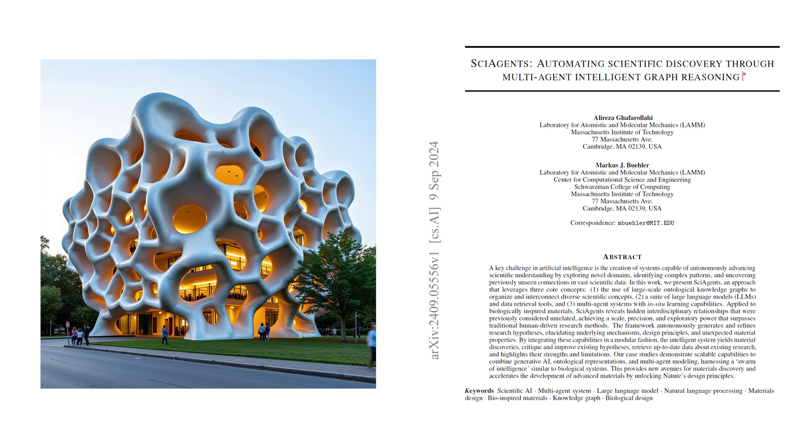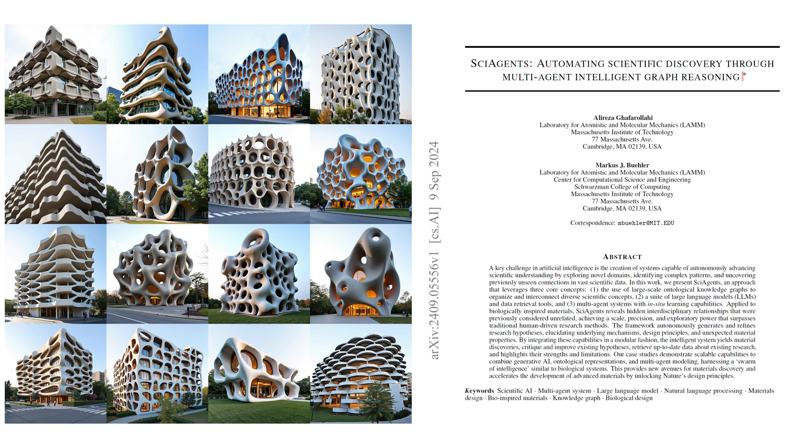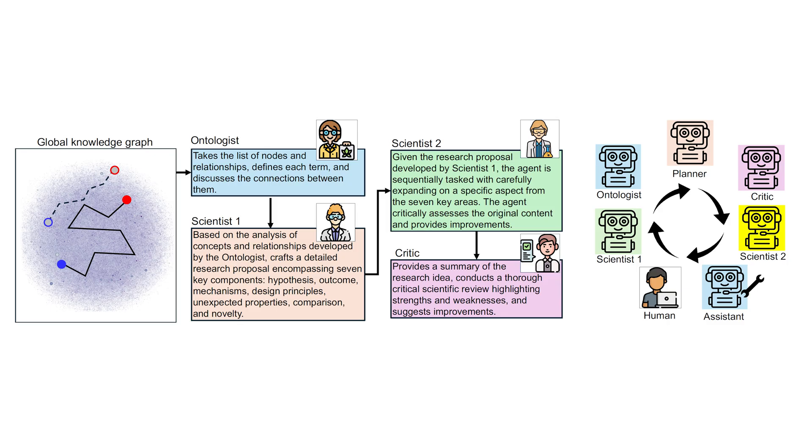I can see that. But are there any concerns with relying on AI for scientific discovery? That's a valid question. While AI can process and analyze data at a scale we can't, it's important to have human oversight. AI can sometimes miss context or make connections that aren't practical. So it's more about augmenting human researchers rather than replacing them. Exactly. The idea is to use AI as a tool to accelerate discovery, not to entirely replace human intuition and expertise. That makes sense. It's a collaboration between humans and AI.